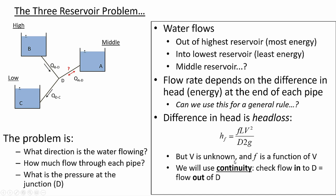The continuity equation — flow in equals flow out. Think about junction D: if the water is going from A towards D, then Q_BD plus Q_AD equals Q_DC. The flow into junction D equals the flow out of junction D. That's another tool in our arsenal. We've got some tools we're going to use, and continuity is an important one today.